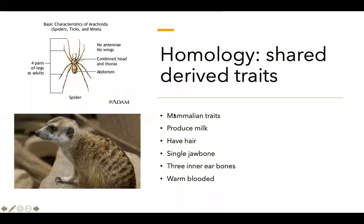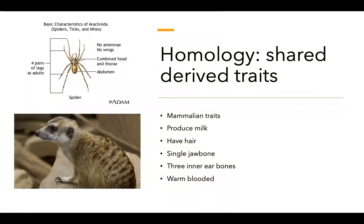Evolutionary biologists use homology, or homologous traits, or shared derived traits, to categorize organisms based on evolutionary relationships. Some examples of mammalian traits include the ability to produce milk, having hair, a single jaw bone, three inner ear bones, and being warm-blooded. Here is a meerkat showing some of these traits.